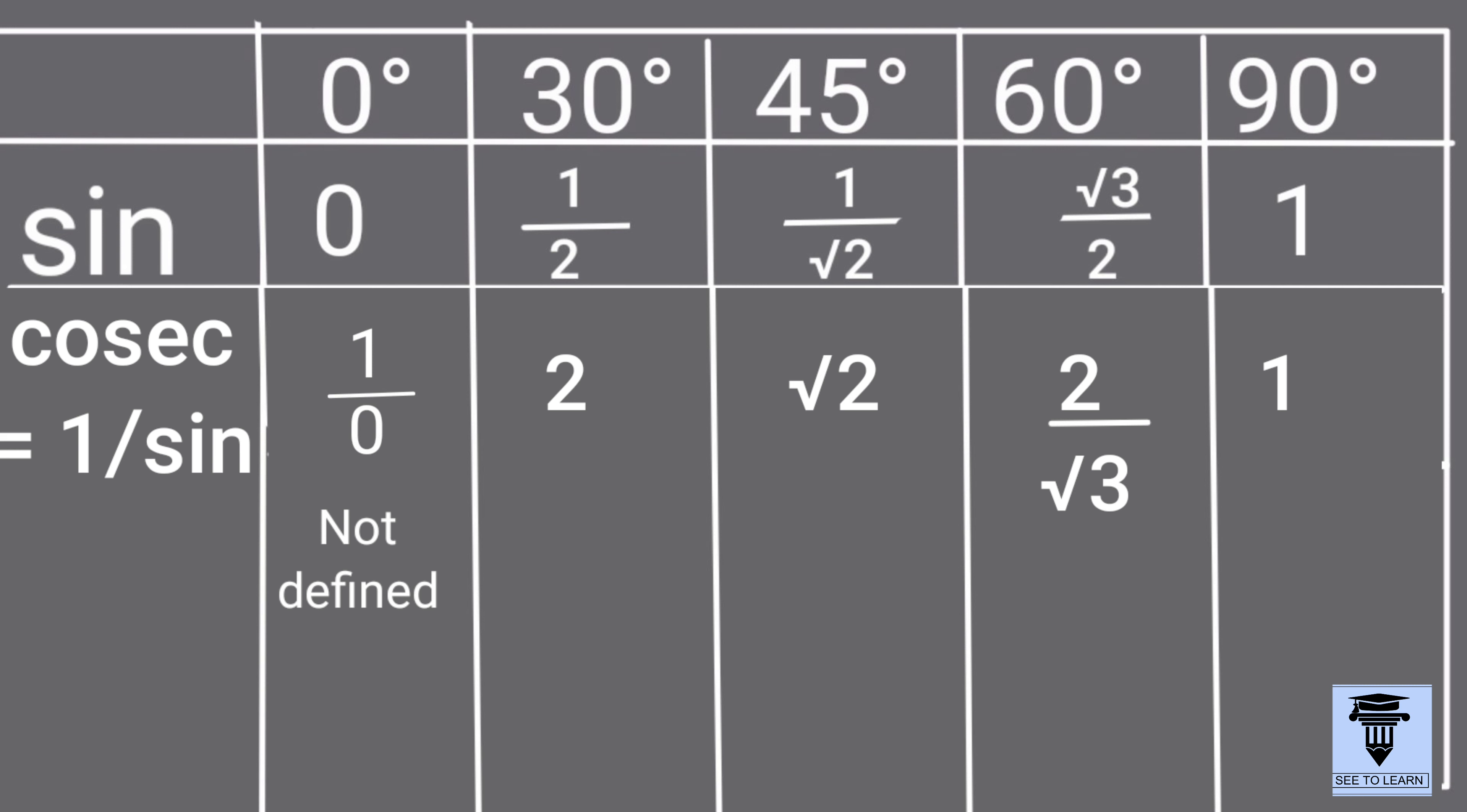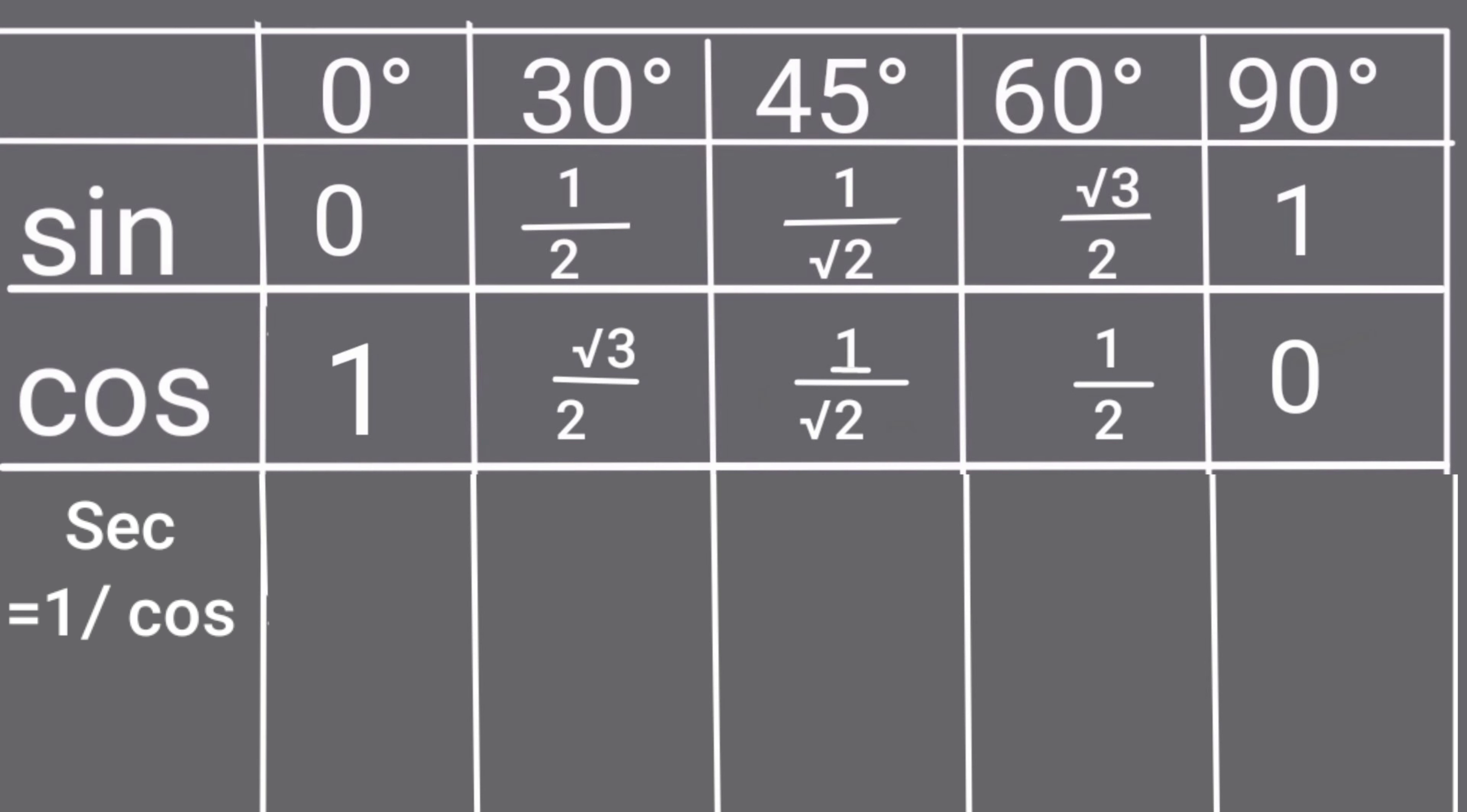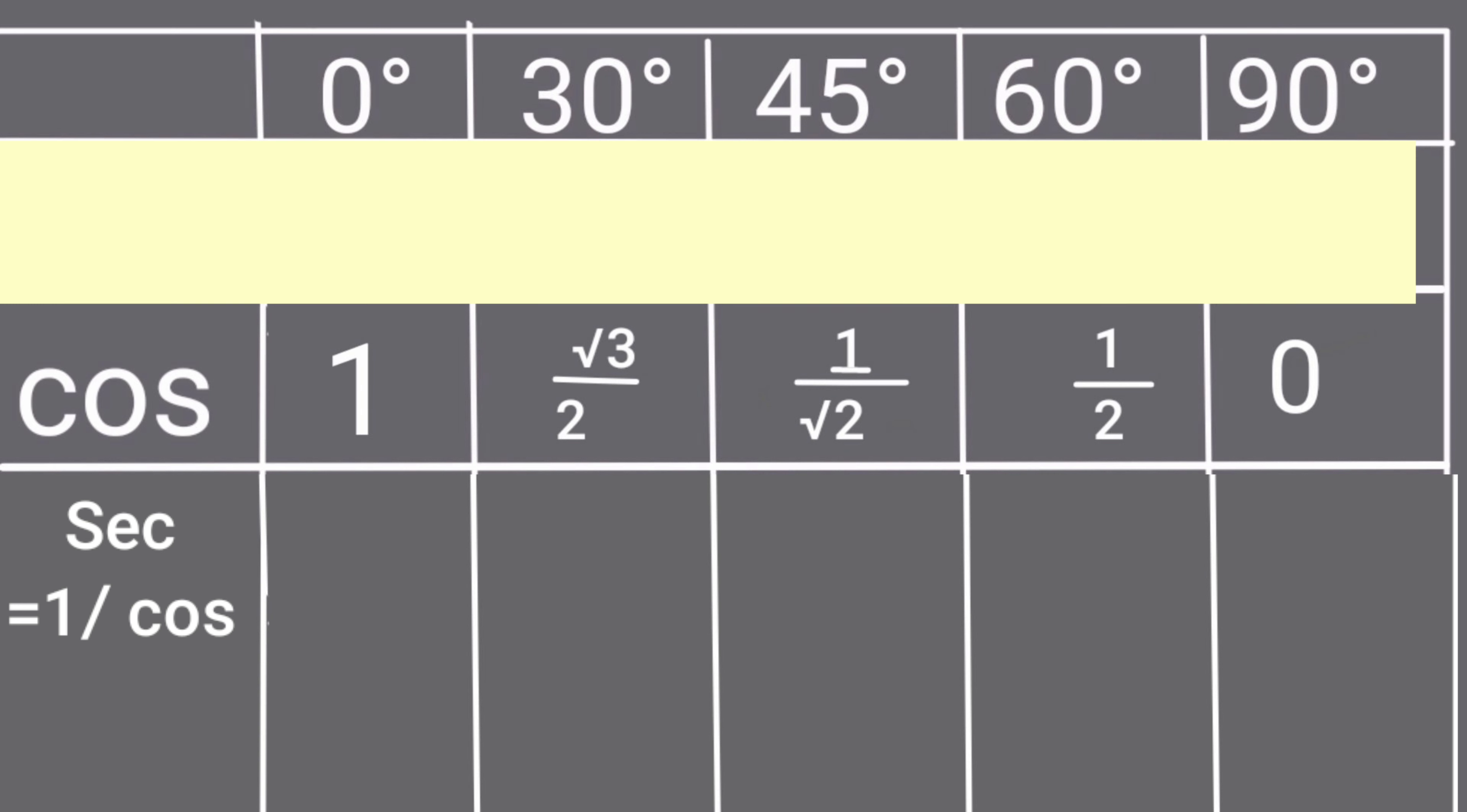Let's find sec ratios. Sec is inverse of cos. Hence, the sec values are 1, 2 over root 3, root 2, 2, and not defined.